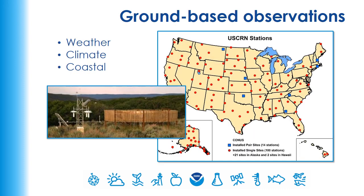Ground-based observations from NOAA can collect weather, climate, and coastal information. There are weather stations, research labs, and other locations where NOAA collects data all across the country.